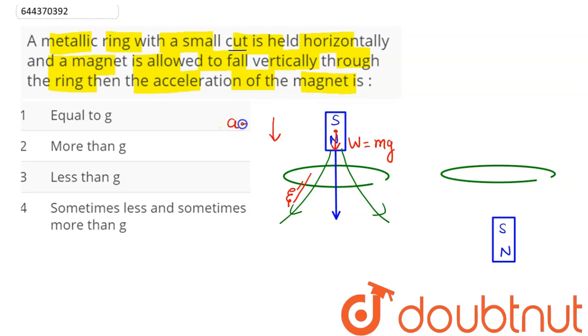Hence the only force acting on this bar magnet is its weight which is equal to mg. Hence acceleration of this bar magnet is equal to g.